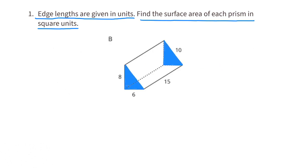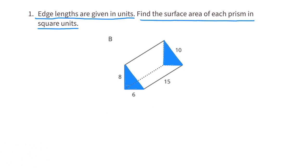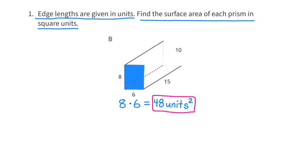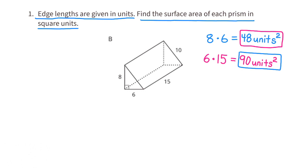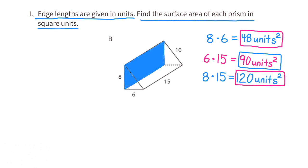Prism B. The triangular bases have dimensions 8 by 6, but remember they're triangles. To find the surface area of each triangle, we do one-half times 8 times 6. However, there are two triangles, so we can treat them as one rectangle: 8 times 6 is 48, so the two triangles combined have a surface area of 48 square units. The side with dimensions 6 by 15 has a surface area of 90 square units. The side with dimensions 8 by 15 has a surface area of 120 square units.